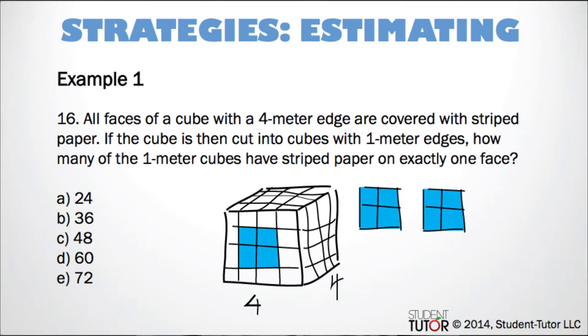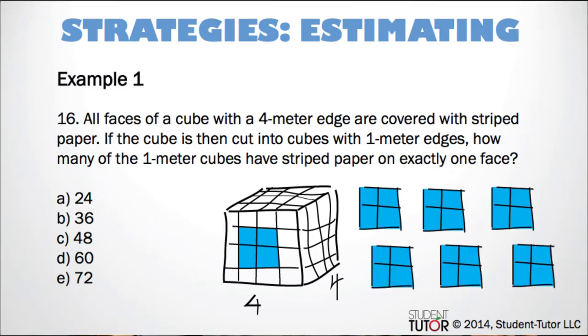All these other cubes have paper on at least two sides. So now we know that four cubes in the middle of each face fit the description and there are six faces. So 4 times 6 is 24. See? Easy.